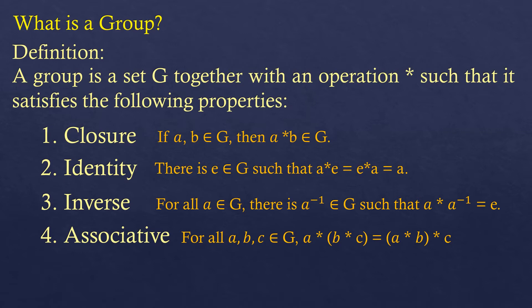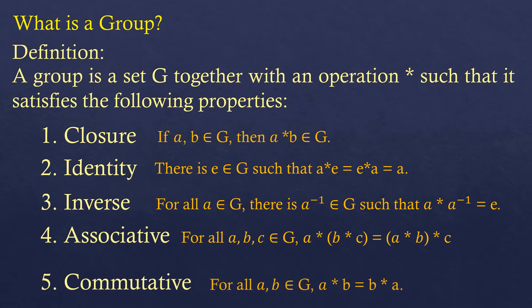Having all four properties — closure, identity, inverse, and associative — means that set is considered a group. If the group also satisfies the commutative property, meaning A star B equals B star A for all A, B in G, then we call it an abelian group. If not, it is a non-commutative or non-abelian group.